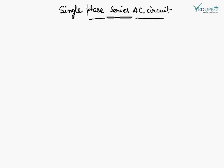In a single phase series AC circuit, current and voltage vary simultaneously — these are called alternating current or AC circuits. All AC circuits are made up of a combination of resistance, inductance, and capacitance. The circuit elements R, L, and C are called the circuit parameters. Now we will see the effect of all these circuits, starting with the purely resistive circuit.